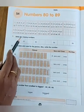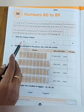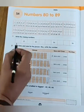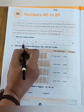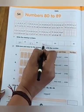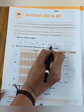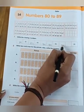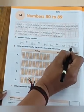Now bit 1. Write the missing numbers. 81, before which number will come? 80. 80, 81, 82, 83, 84, 85, 86, 87, 88, 89.